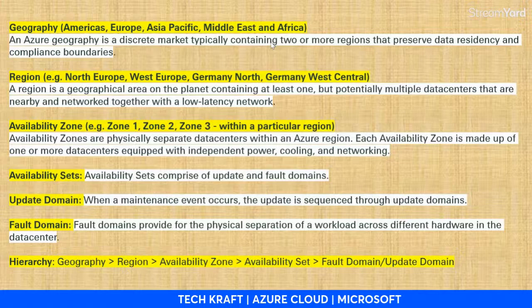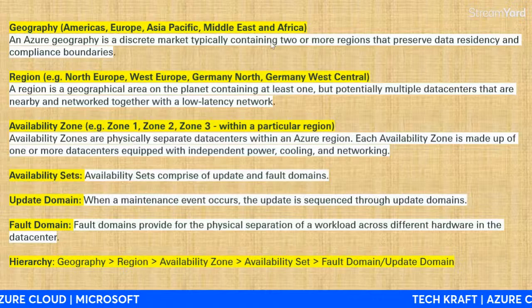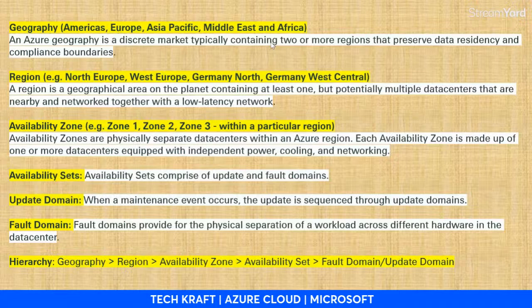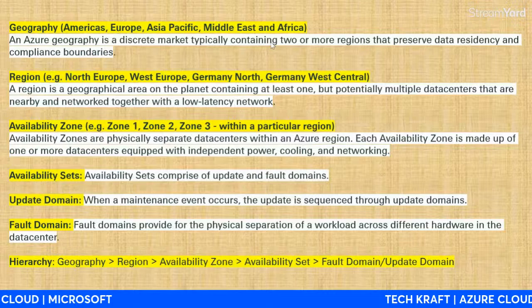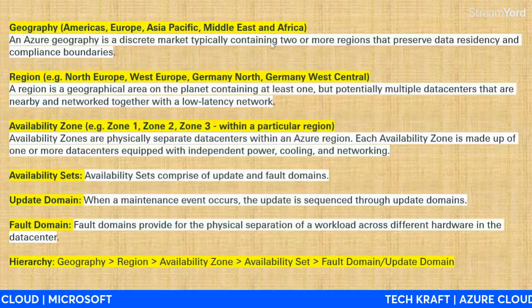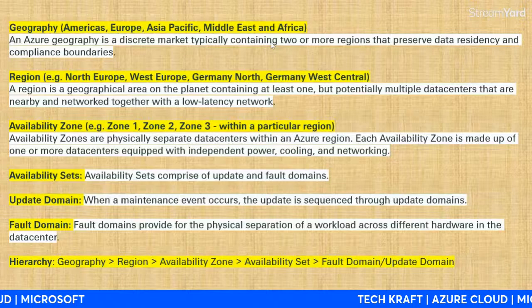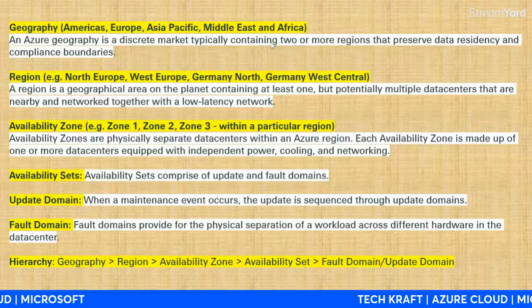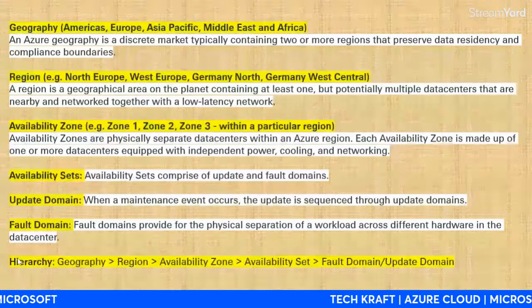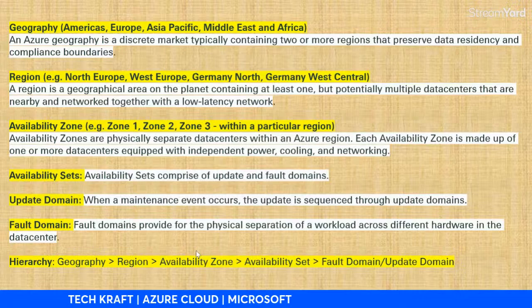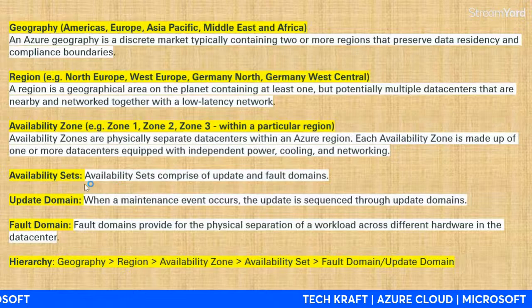India has data centers in Mumbai, Chennai, Hyderabad, and Delhi. Availability sets work like this: if zone 1 (Andhra Pradesh) is disrupted due to a cyclone, nearby zones like Telangana or Tamil Nadu are not affected and can replicate and share data to affected users through a particular network. The hierarchy for Azure data centers is: Geography → Region → Availability Zone → Availability Set → Fault Domain / Update Domain.